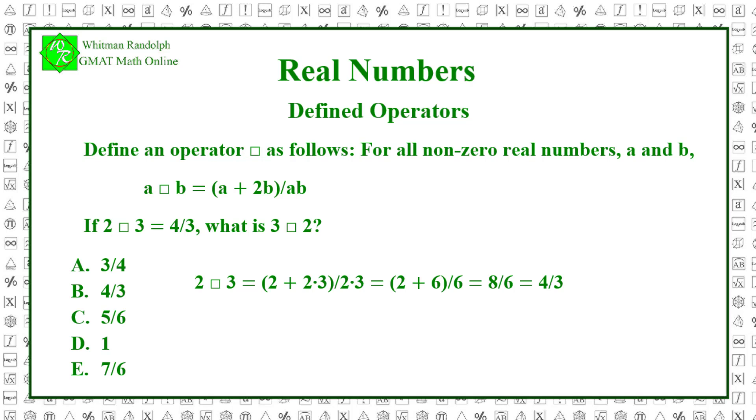Now let's reverse the roles of 2 and 3. 3 box 2 equals (3 + 2 times 2) / (3 times 2), which equals (3 + 4) / 6, and that equals 7/6. So the correct answer is E.